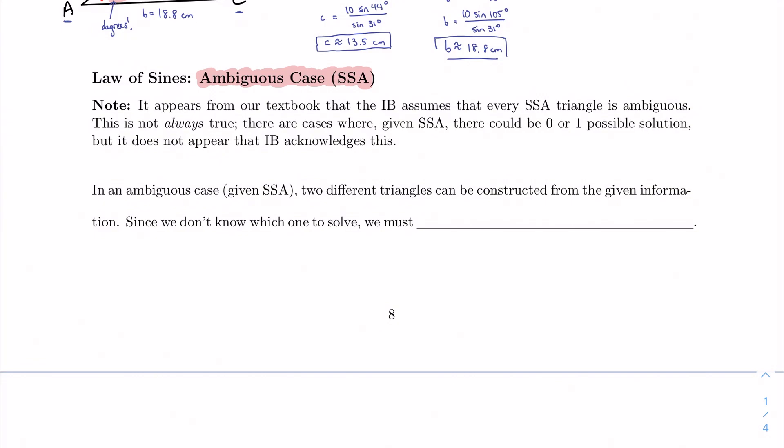But that is not always true. It is possible in these circumstances that you could have no possible triangles or one possible triangle, but it doesn't seem like IB really acknowledges this. From my understanding so far, they want you to check for an ambiguous case where you'd have two triangles any time you're given side-side-angle.